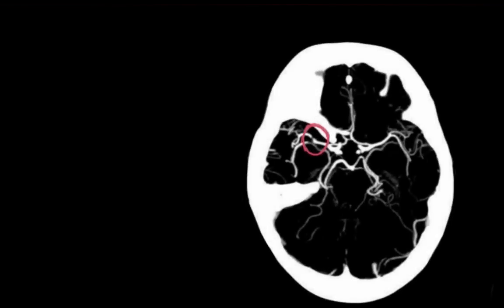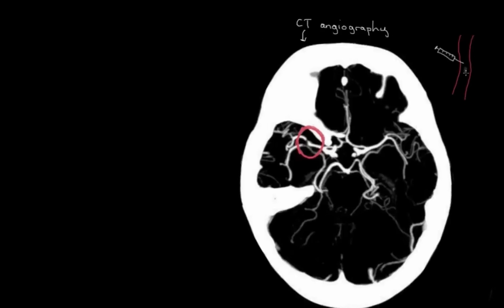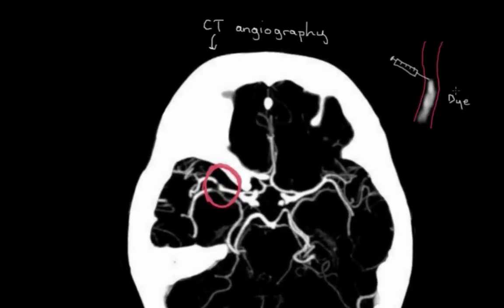This subtype of CT scanning is called CT angiography and it can give you a lot of useful information as well. A special dye gets injected into your bloodstream and it makes your blood vessels sort of light up on a CT scan, so it's really easy to see where in your cerebral blood vessels the problem is that caused the stroke because everything's all lit up.